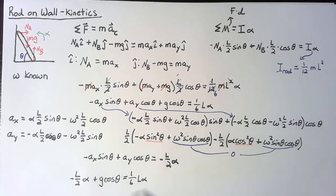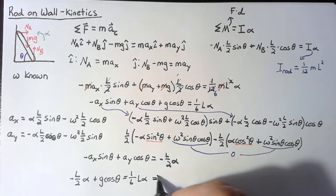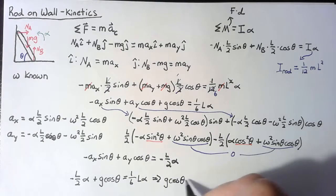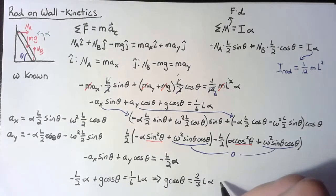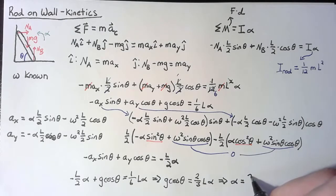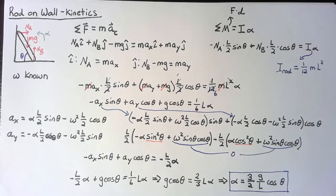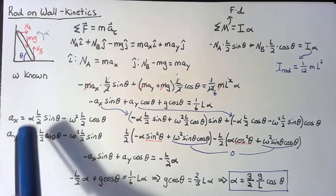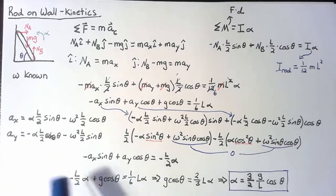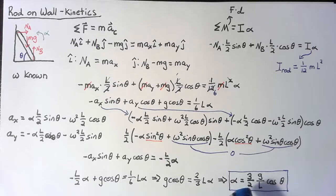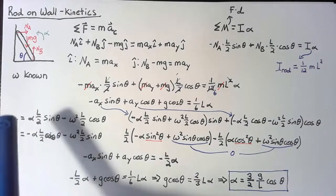Moving the L/2 alpha to the right-hand side: one-half plus one-sixth equals two-thirds, so g cosine theta equals two-thirds L times alpha. Solving for alpha gives alpha equals three-halves times g over L times cosine theta. This is our final equation. If desired, we can substitute this back to find Ax and Ay, but finding alpha means we can plug in values for the rest of the solution.